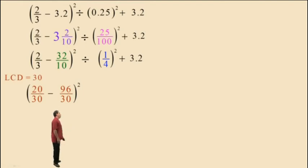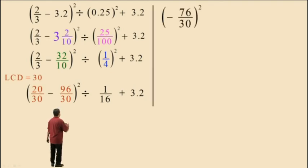Now we're going to divide, but let's go ahead and evaluate that exponent 1/4. 1/4 squared is 1/4 times 1/4, which is 1/16, and we'll bring down our work. Now 20/30 subtract 96/30 is 76/30, but it's negative. And don't forget, that's in the parentheses. It still needs to be squared. Now we're dividing by 1/16.